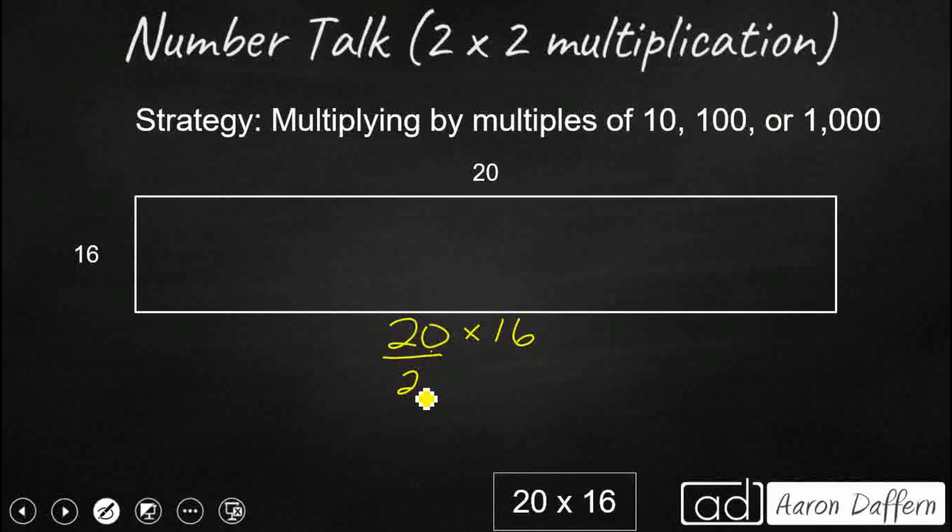So we think 2 times 16. We just drop that zero for a second. We think, what is 2 times 16? Well, that's going to make 32. Now what we do is we bring that zero back in. We just slap it on the end, and we're going to get 320.